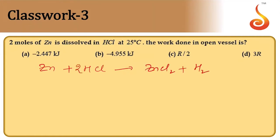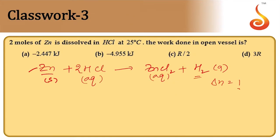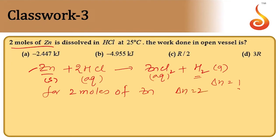In this reaction, except hydrogen, all remaining species — zinc is solid, HCl is aqueous, zinc chloride is aqueous — only H₂ is a gaseous component. Therefore Δn = 1 for 1 mole of zinc. Since there are 2 moles of zinc involved, Δn = 2.